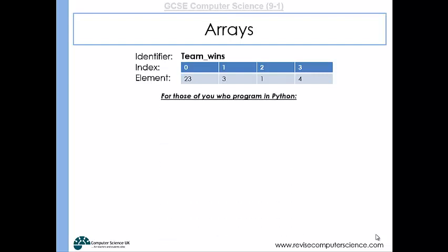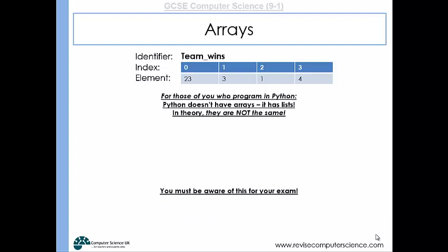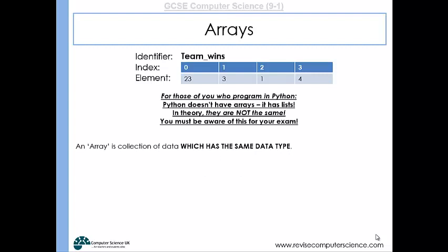If you program in Python, you may never have talked about arrays before, because Python uses lists, and in theory they're not the same. Regardless of what language you program in, you must be aware that lists and arrays are not the same thing. An array is a collection of data which has the same data type—that's the most important thing to recognize. Lists can have lots of different data types within them, but an array has just the same data type. It might be a load of integers or a load of strings.